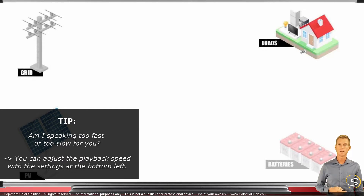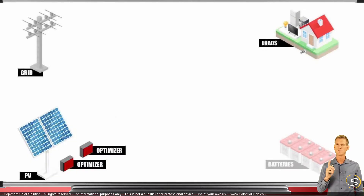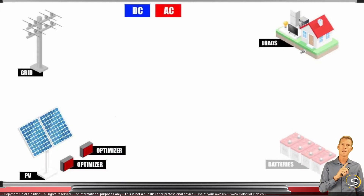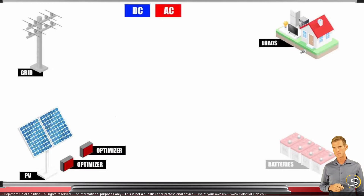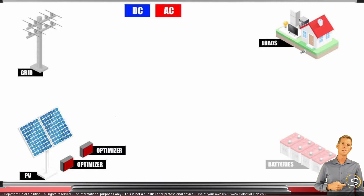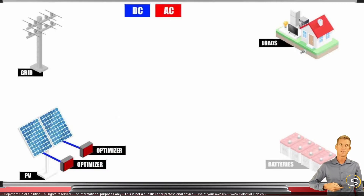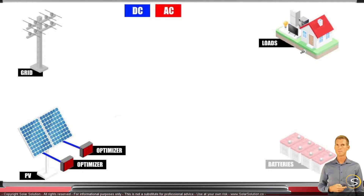Traditionally the solar panels will be connected to an optimizer. Let's use color coding: blue lines represent DC direct current and red lines represent AC alternating current. The DC power from the panels is fed to an optimizer which tries to get the maximum power output from the panels.